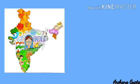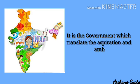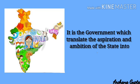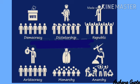In modern times, a state manifests itself through a government, and it is the government which translates the aspiration and ambition of a state into reality. There are different types of government like monarchy, democracy, autocracy, etc.